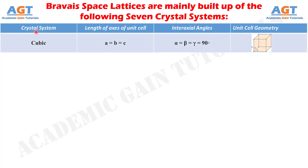The first of the seven crystal systems is the cubic system. In Bravais lattices with cubic systems, the lengths of axes A, B, and C of the unit cell are equal to one another. Also, the interaxial corresponding angles alpha, beta, and gamma are equal to one another and they are all 90-degree angles, as we can see in an example of cubic system in this figure.